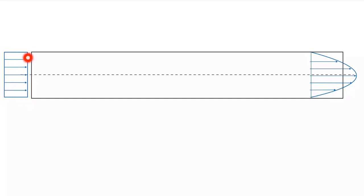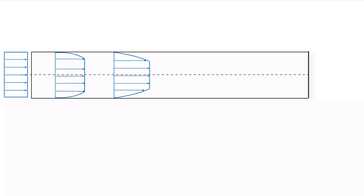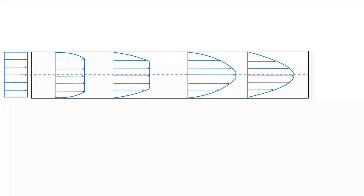Here we have a pipe flow. Imagine that we have a constant velocity profile coming into the pipe flow. As that flow enters the pipe, we have the no-slip condition on the wall, and so we start to see this profile changing as we go into the pipe. As we move further along the pipe, we'll see further changes until we get to a certain point where we do not see changes in that velocity profile anymore.